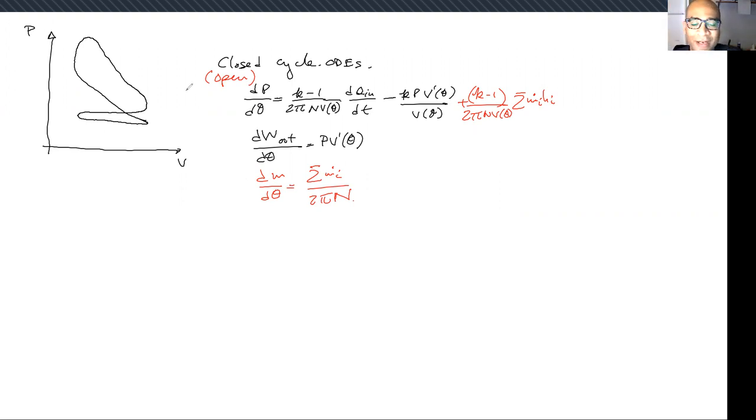Okay, so now we need to replace this term here, this dQ/dθ. I'm just going to write this in black. I'm going to call this Q_dot_in, where the dot is just a time derivative. So now we need models for all of these different bits.